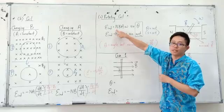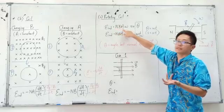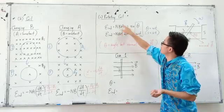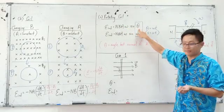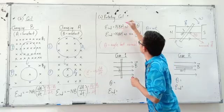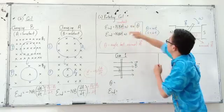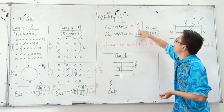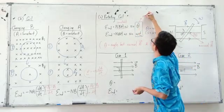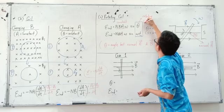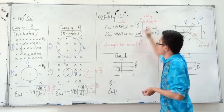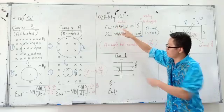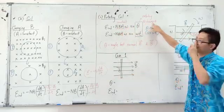N is the number of turns, B is the magnetic field, A is the area, and omega is the angular speed. All of these are constant — the magnetic field is constant, the area is constant, and the angular speed is also constant. But what changes is theta, because the coil is rotating. Previously, area was changing; now, all of them are constant and only theta changes because it is rotating.